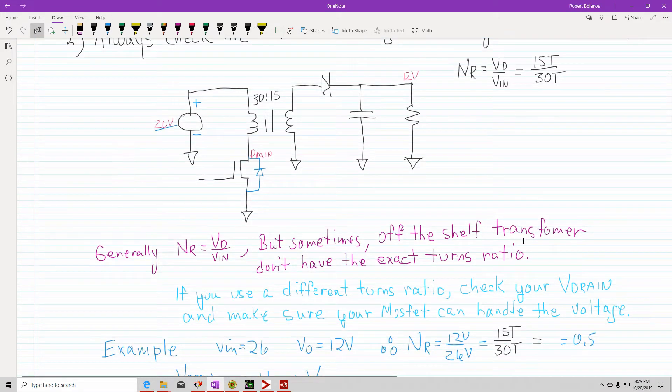So here's a schematic. And we're going to say that we're using a turns ratio of 30 turns to 15 turns. And this satisfies this equation. So I said that this is the right way to set your turns ratio. So basically this is the same thing as using 12 volts and 26 volts, or actually 24 volts. So that would be the same turns ratio.